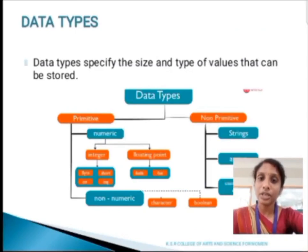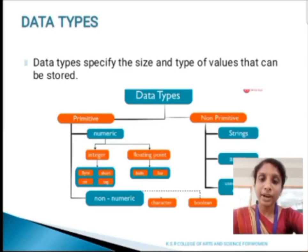Next, we are going to see about data types. A data type specifies the size and type of values that can be stored in variables. Data types are classified into two types: primitive and non-primitive. Primitive is further divided into numeric and non-numeric. Non-primitive is divided into three types: string, array, and user-defined methods.